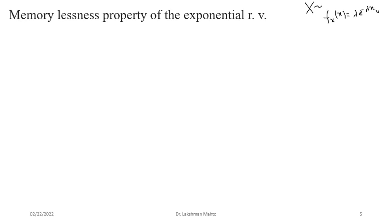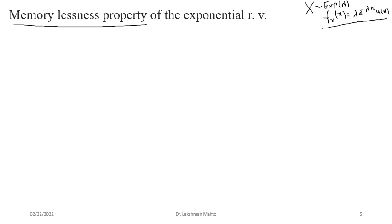The PDF of the exponential random variable is f(x) = λ·e^(−λx)·u(x), written in unified form using the unit step function u(x), with parameter λ. It has an interesting property called memorylessness — meaning the past does not affect the future.